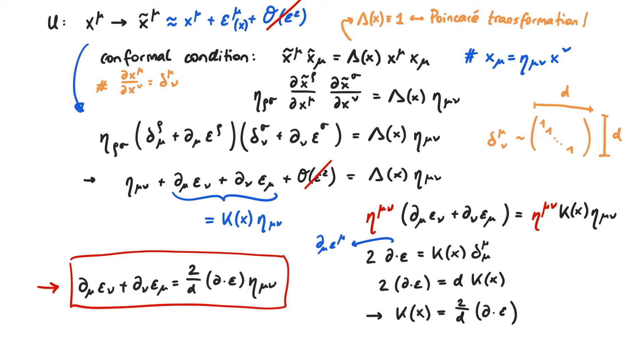The summary of this video is that we started with a condition for conformal transformations, then assumed an infinitesimal transformation with some function epsilon, and used our initial condition to get a constraining equation for epsilon. And that's pretty much it for this video, thanks for watching.